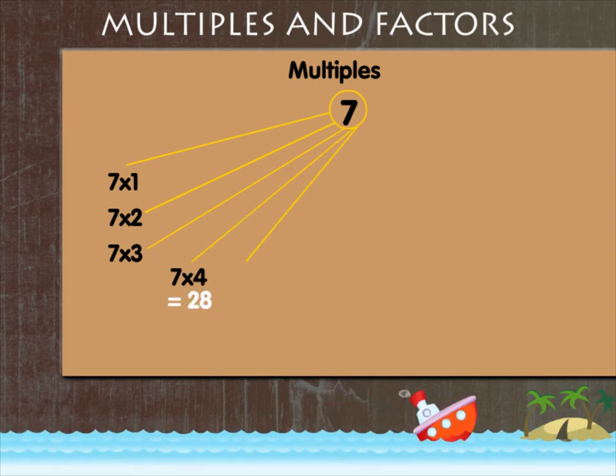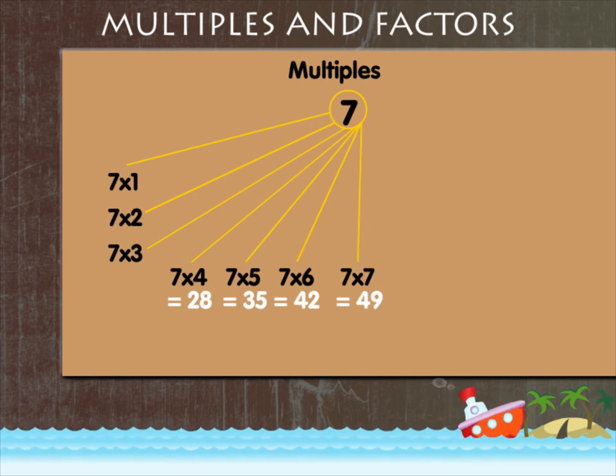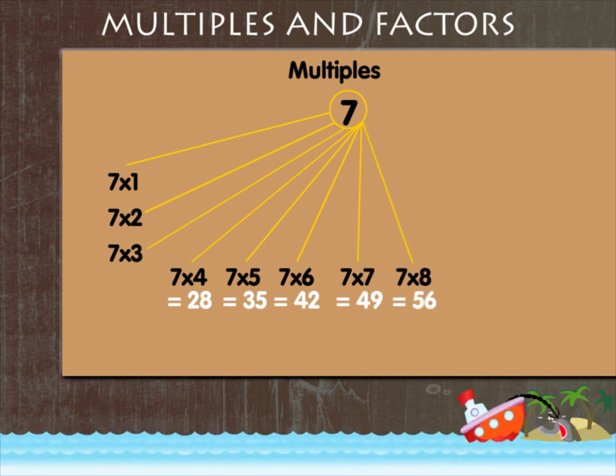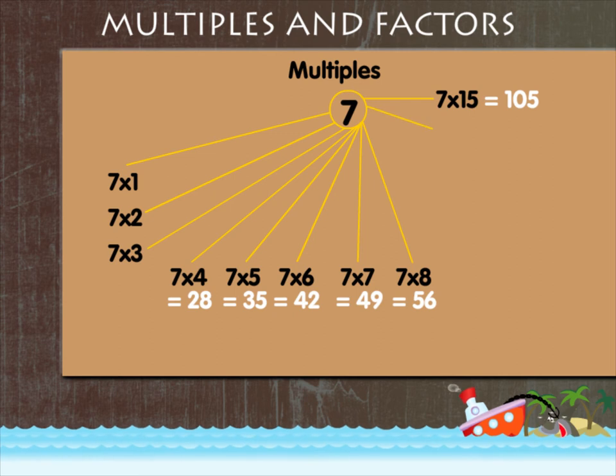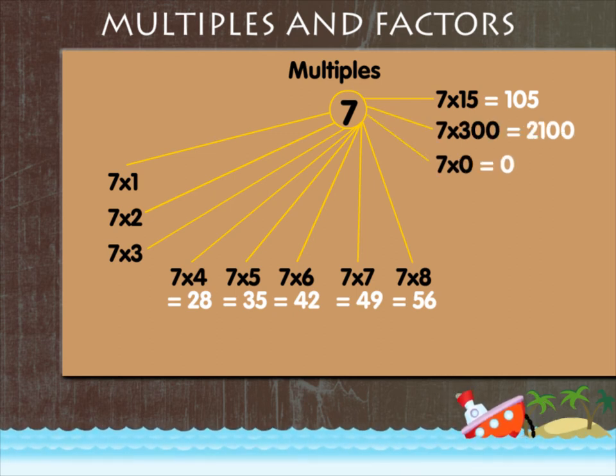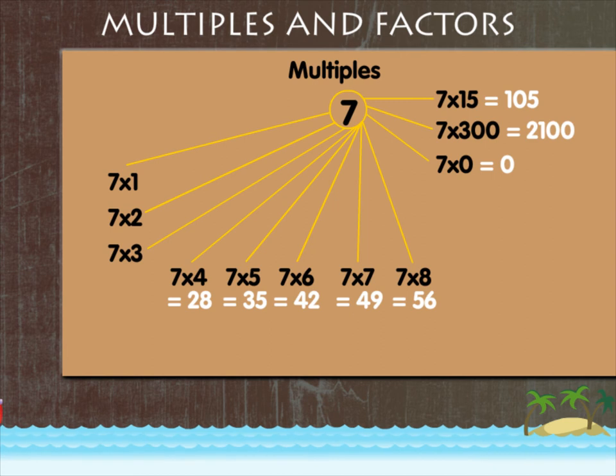Likewise, 28, 35, 49, 56 and still more. 105, 2100 and 0 are all multiples of 7.